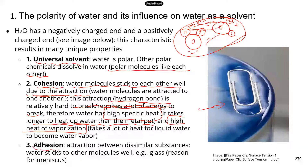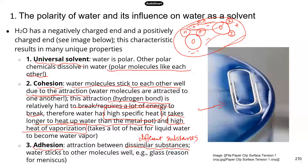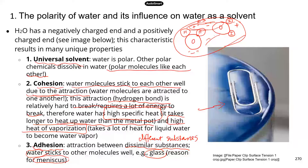The next property is adhesion, which is the attraction between different substances. Normally we're looking at water and something else — for instance, water and glass. Water molecules like to stick to glass, which is why when you measure something in a glass graduated cylinder, you'll see a meniscus: the water surface is not flat, it's concave. That's because water molecules stick to the glass and climb up a little. That's adhesion.